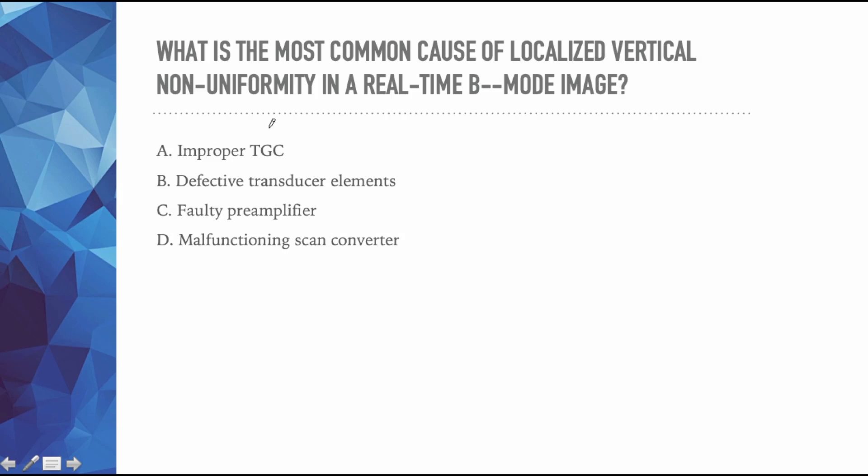All right. What is the most common cause of a localized vertical non-uniformity in a real-time B-mode image? There's a lot of keywords in here. So we're looking for the most common. We're looking for localized and this is a big word - vertical non-uniformity in a real-time B-mode image. So if we have our image this is saying localized, so it's going to be one area and it's vertical. So to me that would look like stripes. I'm thinking there's some stripes in this image. Why are there stripes in this image? If this was horizontal, we'd have stripes running this way. So we're looking for vertical non-uniformity in a real-time image. It's not frozen, it's moving.